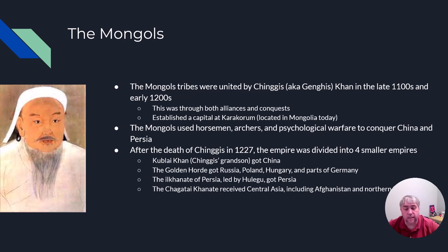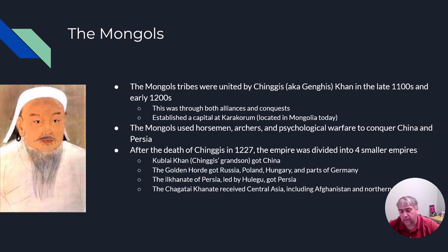Genghis reorganized the Mongols — he weakened family ties and spread wealth to those who were loyal to him, so it was about how you helped him rather than who you were related to. He decreed religious freedom, supported international trade, exempted the poor from taxation, and encouraged literacy amongst his people.